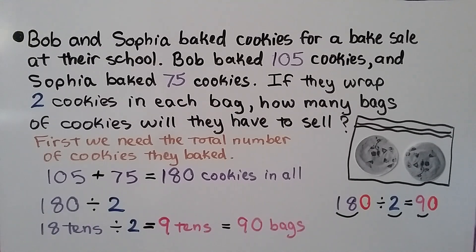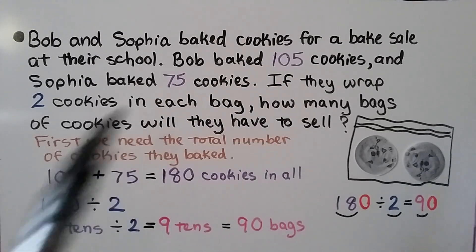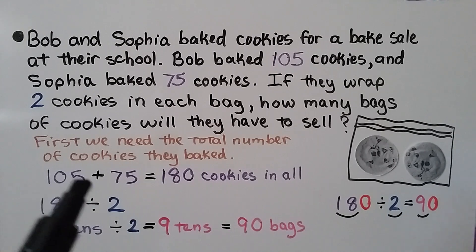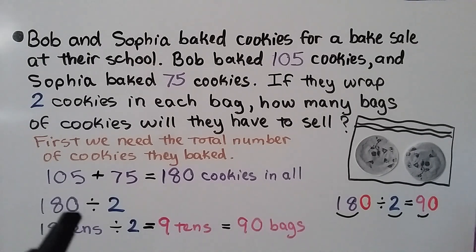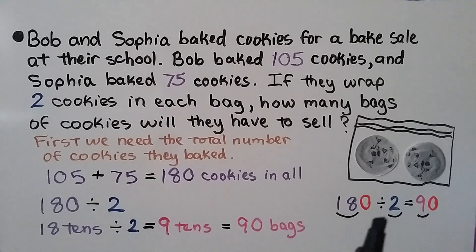Bob and Sofia baked cookies for a bake sale. Bob baked 105 cookies and Sofia baked 75 cookies. They wrap 2 cookies in each bag. How many bags will they have to sell? First, find the total: 105 plus 75 equals 180 cookies. Now divide 180 by 2: the basic fact is 18 divided by 2 equals 9, and with one zero in the dividend, we get one zero in the quotient — 90 bags.